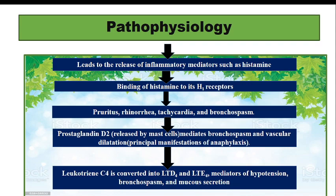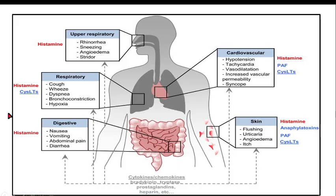Here is a diagrammatic representation of histamine's effects. Histamine causes upper respiratory symptoms like rhinorrhea, sneezing, angioedema, and stridor; respiratory problems like cough, wheezing, dyspnea, bronchoconstriction, and hypoxia; digestive symptoms like nausea, vomiting, abdominal pain, and diarrhea; cardiovascular problems like hypotension, tachycardia, vasodilation, increased vascular permeability, and syncope; and skin reactions like flushing, urticaria, angioedema, and itching.